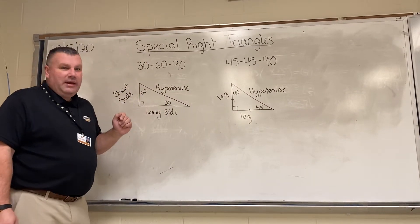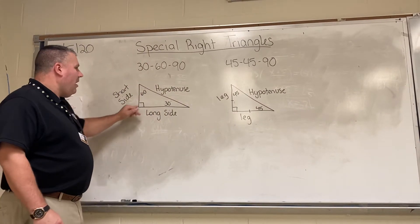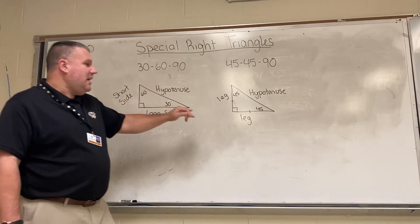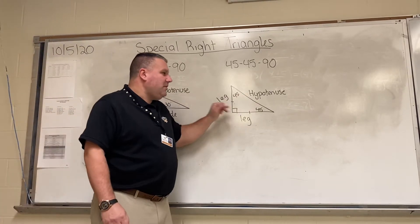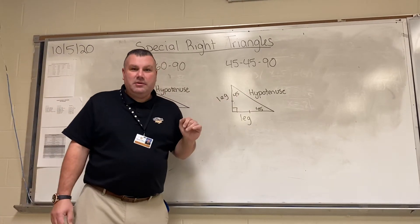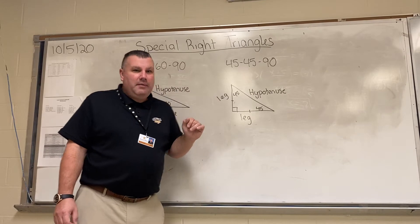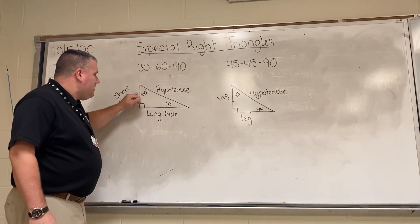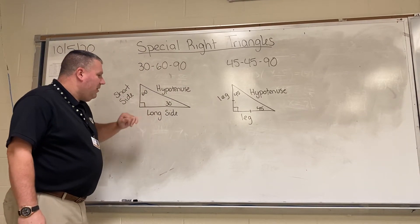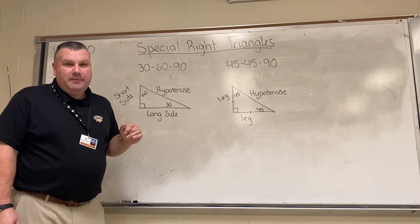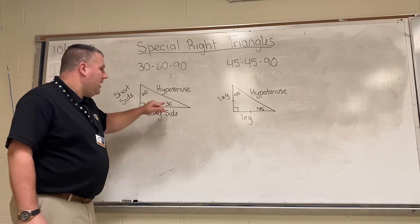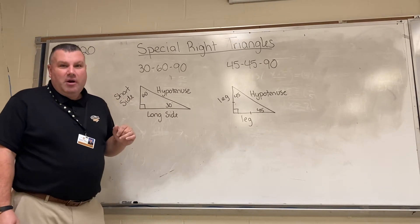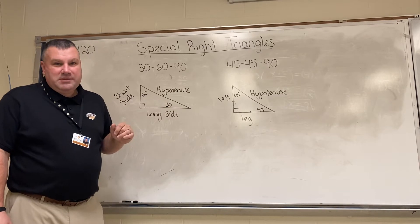For the 30-60-90 triangle, the side opposite the 90-degree angle is the hypotenuse — that is the same for both of these triangles. The side opposite to the 60-degree angle is called the long side. The side opposite to the 30-degree angle is called the short side.